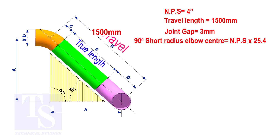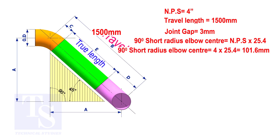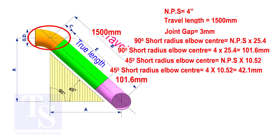To calculate the elbow center of a 90 degree short radius elbow, multiply the nominal pipe size by 25.4. The answer is 101.6 millimeters. To calculate the elbow center of a 45 degree short radius elbow, multiply the nominal pipe size by 10.52. The answer is 42.1 millimeters.